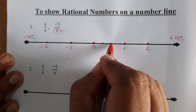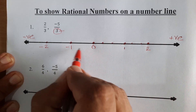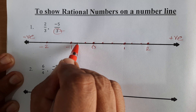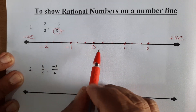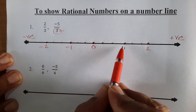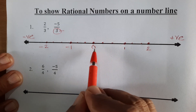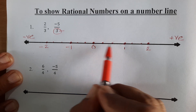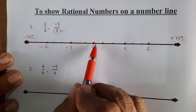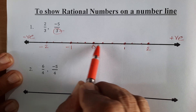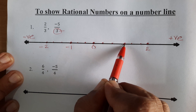We mark divisions — 1, 2 — in each unit interval. To divide this distance into 3 equal parts, we have to take 2 points. This 1 unit: this is the 1st part, this 2nd, and this is the 3rd part.